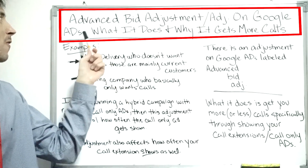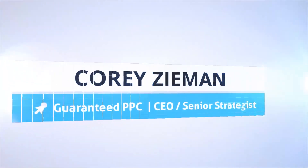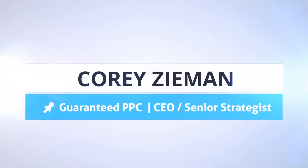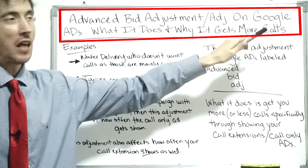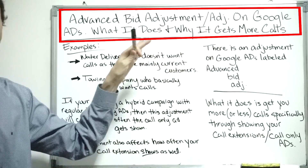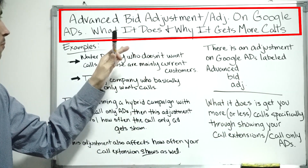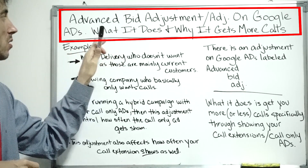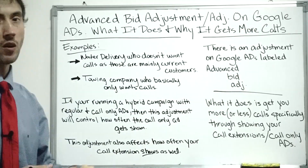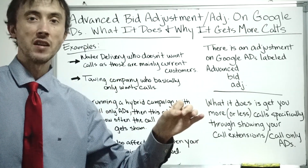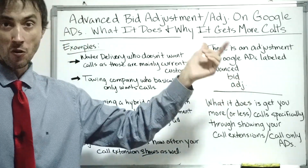Today we're going to talk about what the Advanced Bid Adjustment is inside Google Ads — labeled 'Advanced Bid Adj' in your account. This video is for anyone wondering what the hell that even does. In short, it gets you more phone calls you're looking for, specifically for mobile devices.